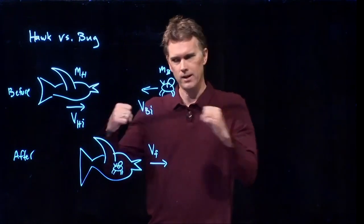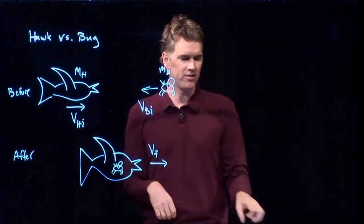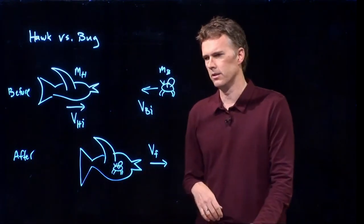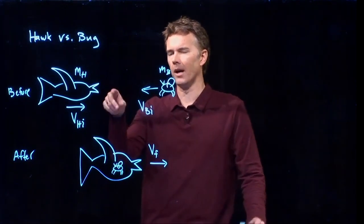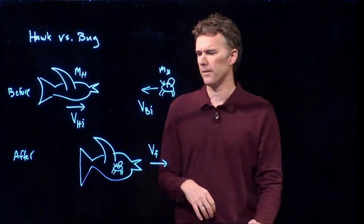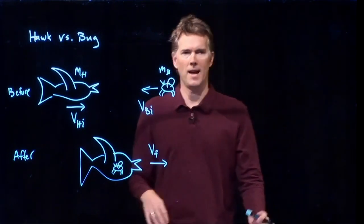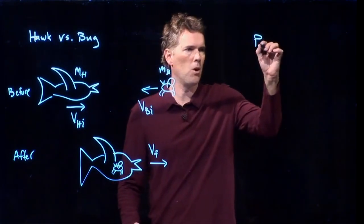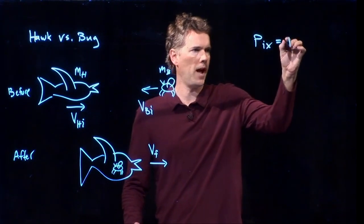Elastic is like a super ball. If things bounce off each other, that's an elastic collision. And in this case, if the bug had bounced off the bird's beak, that would be elastic. Let's take a look at conservation momentum. All one dimension, so we're only worried about x.